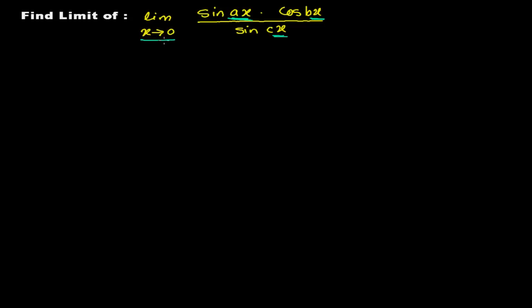If you want to directly solve by plugging the value of x as zero, let me show you. When x tends to zero, sine ax becomes sine of a times zero, which is sine zero — that is zero. Here also, c times x is zero, so sine zero is again zero. You're going to get an indeterminate value.